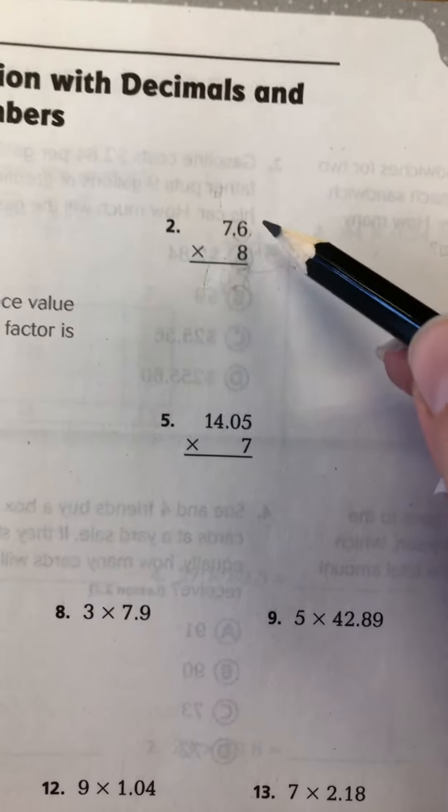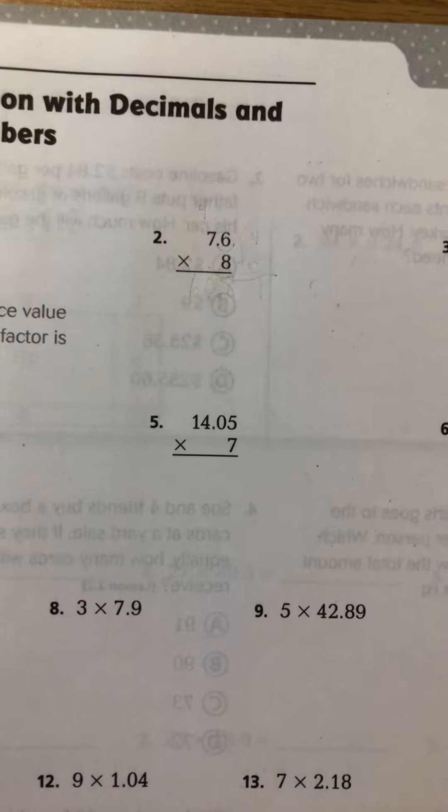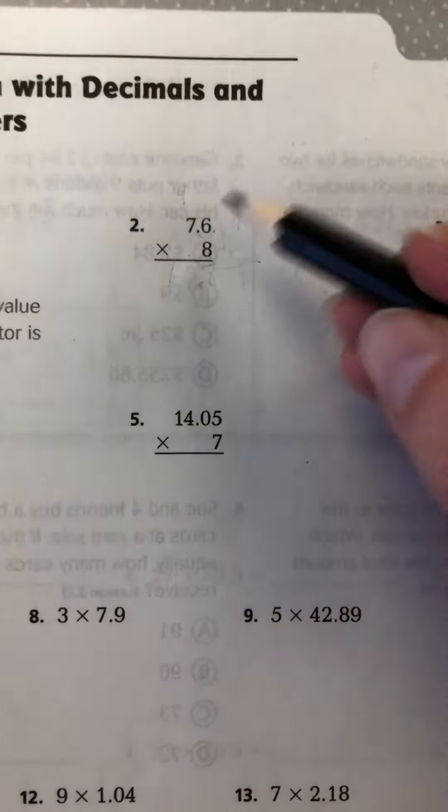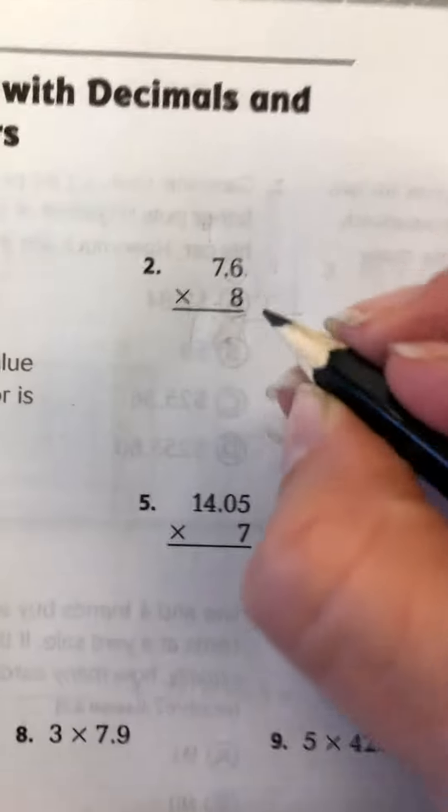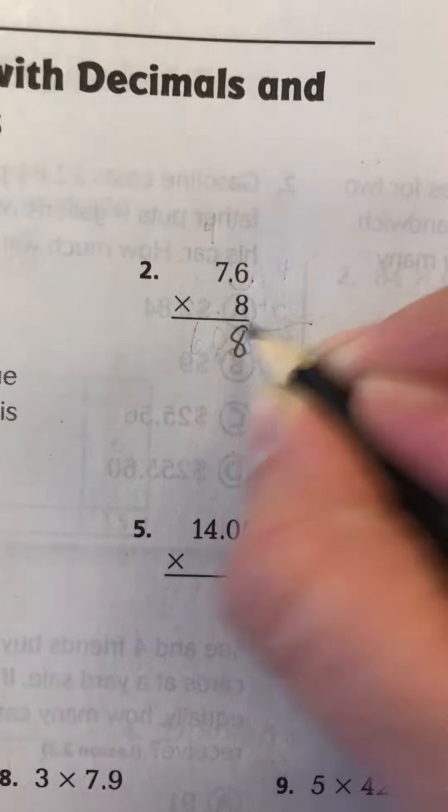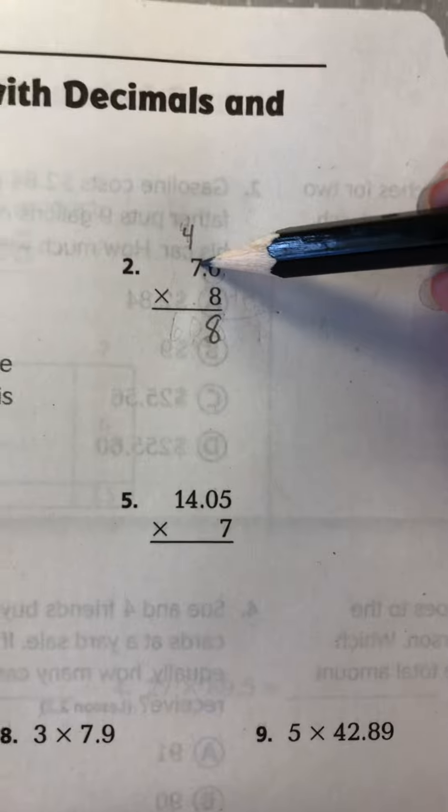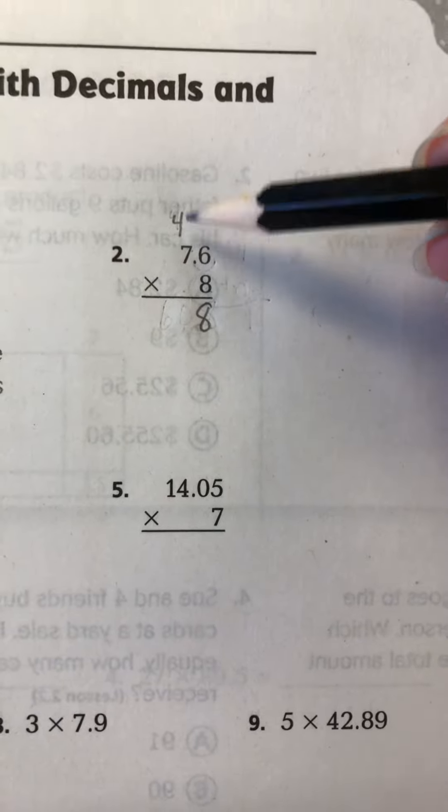We have 7.6 times 8. So what you're really going to want to do is pretend the decimal point's not there and multiply like normal. 8 times 6 is 48. So we're going to want to put our 8 and carry the 4 to regroup. 8 times 7 is 56, plus 4 is 60.